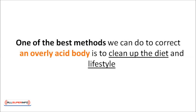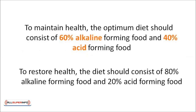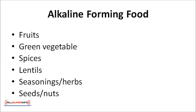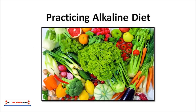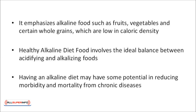One of the best methods to correct an overly acidic body is to clean up the diet and lifestyle. To maintain health, the optimum diet should consist of 60% alkaline-forming food and 40% acid-forming food. To restore health, the diet should consist of 80% alkaline-forming food and 20% acid-forming food. Generally, alkaline-forming foods consist of most fruits, green vegetables, spices, lentils, seasonings or herbs, and seeds and nuts, whereas acid-forming foods comprise meat, fish, poultry, eggs, grains and legumes. The alkaline diet, also known as the alkaline-ash diet or acid-alkaline diet, emphasizes alkaline foods such as fruits, vegetables, and certain whole grains which are low in caloric density. Having an alkaline diet may have potential in reducing morbidity and mortality from chronic diseases.